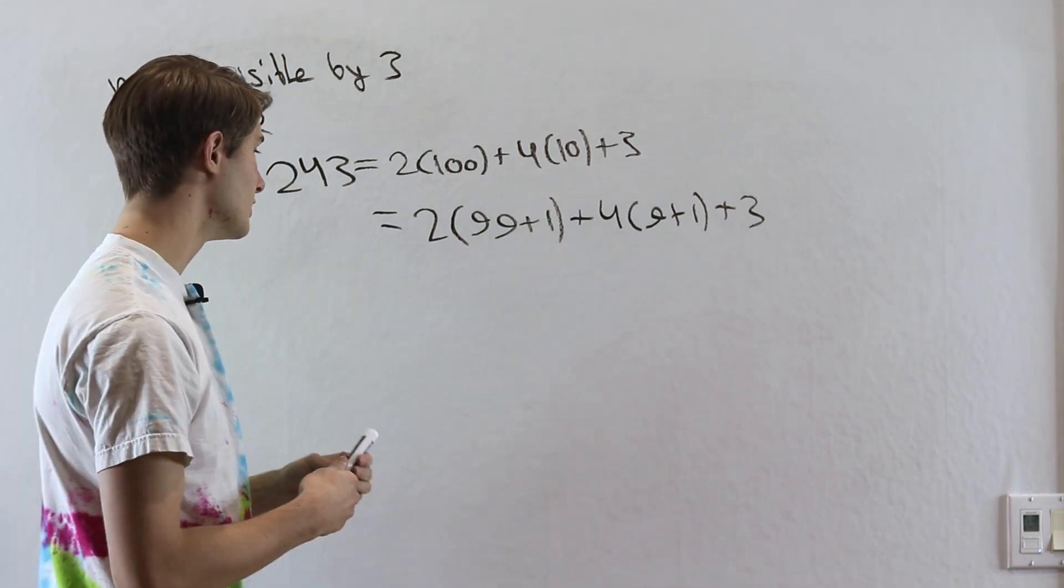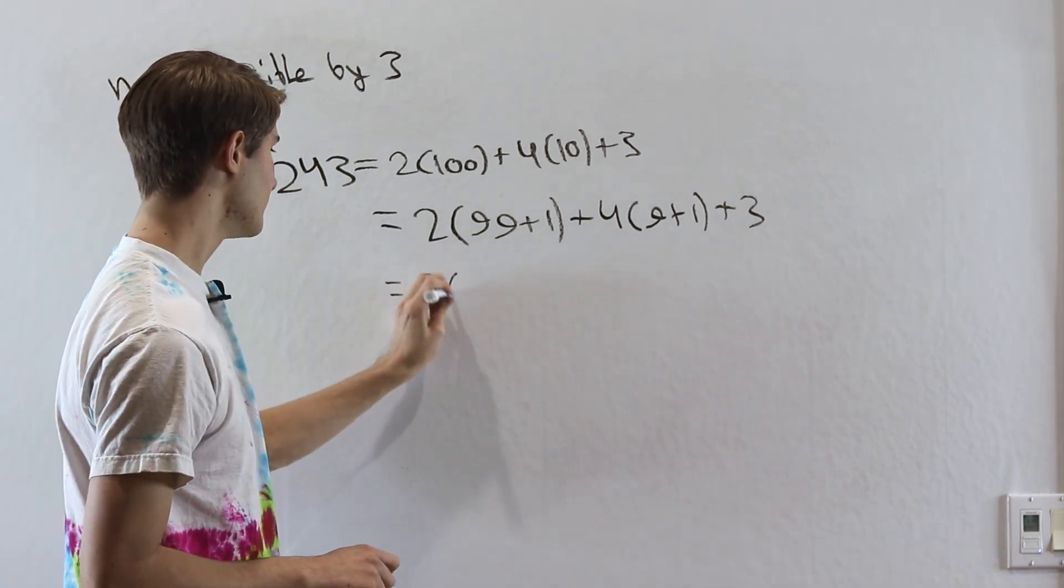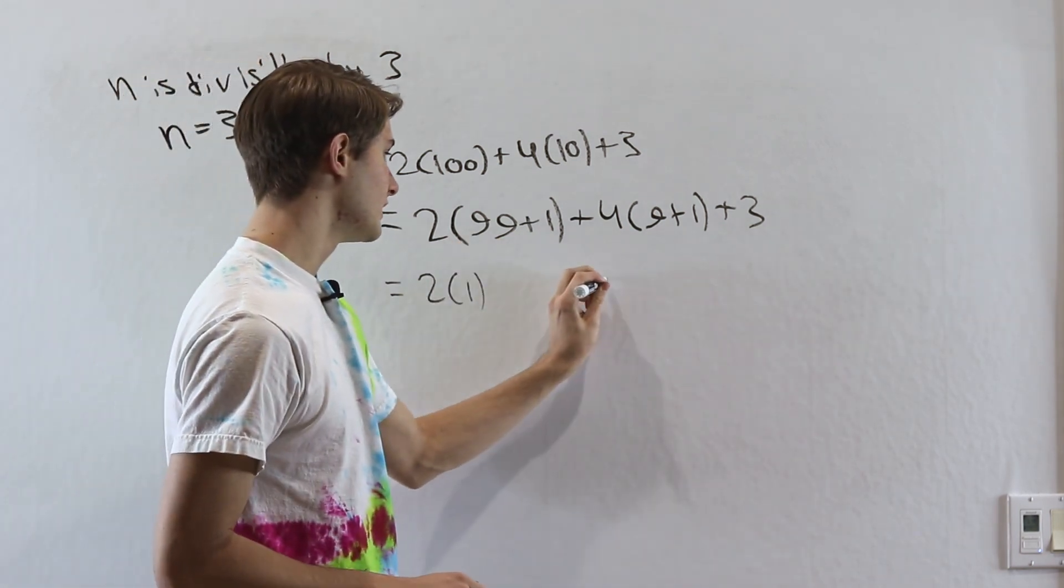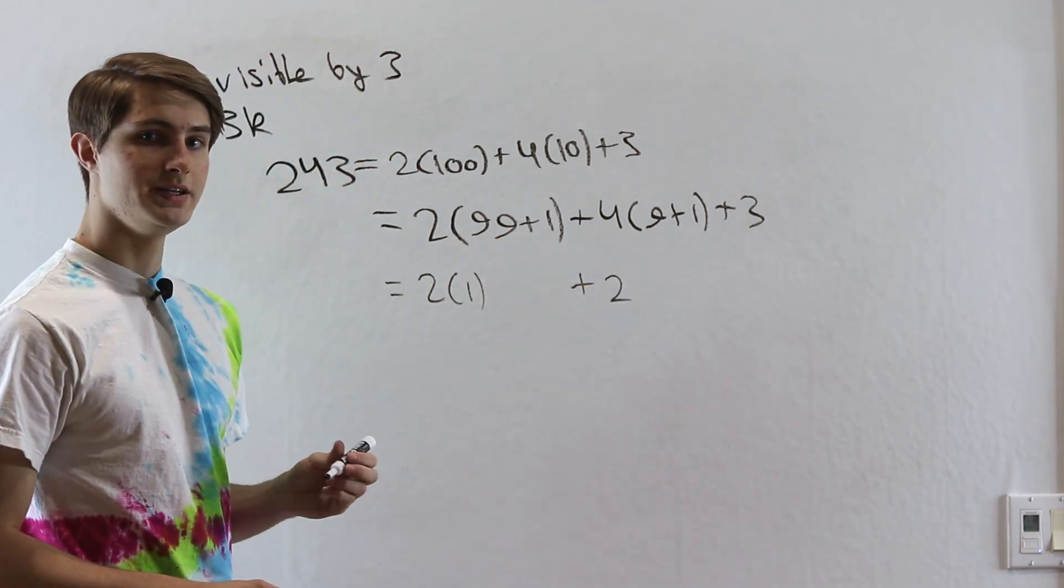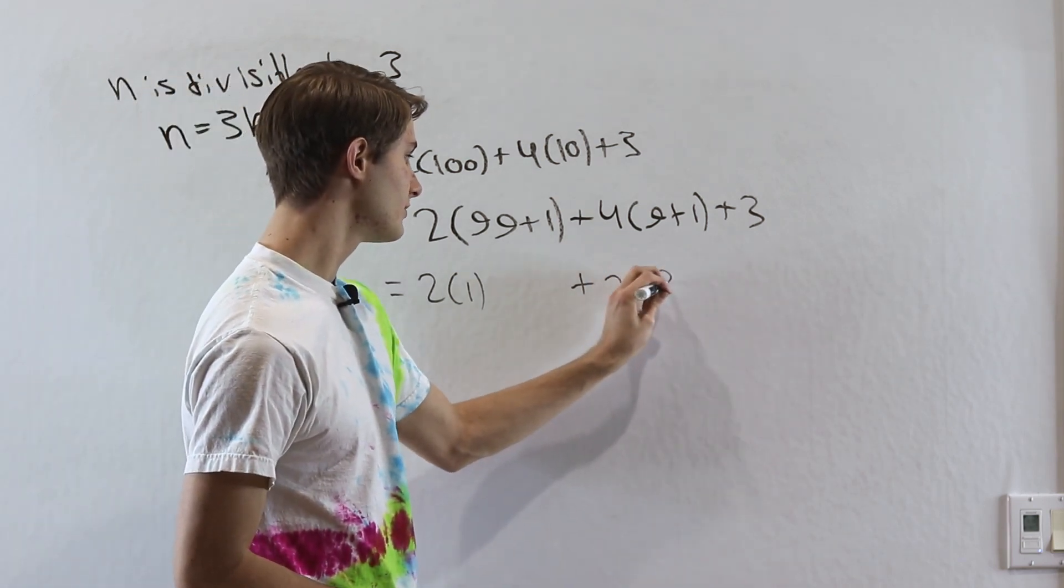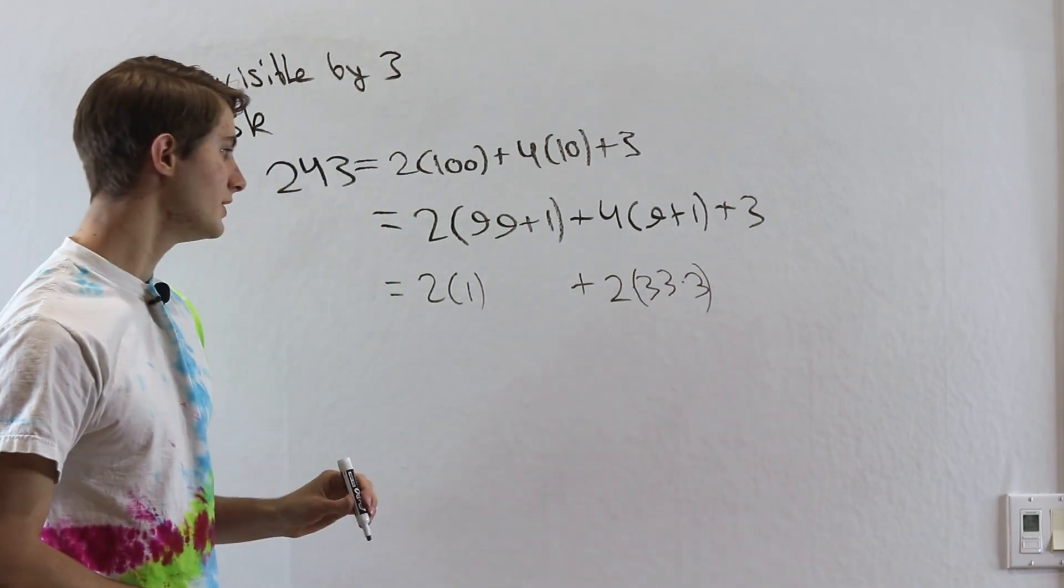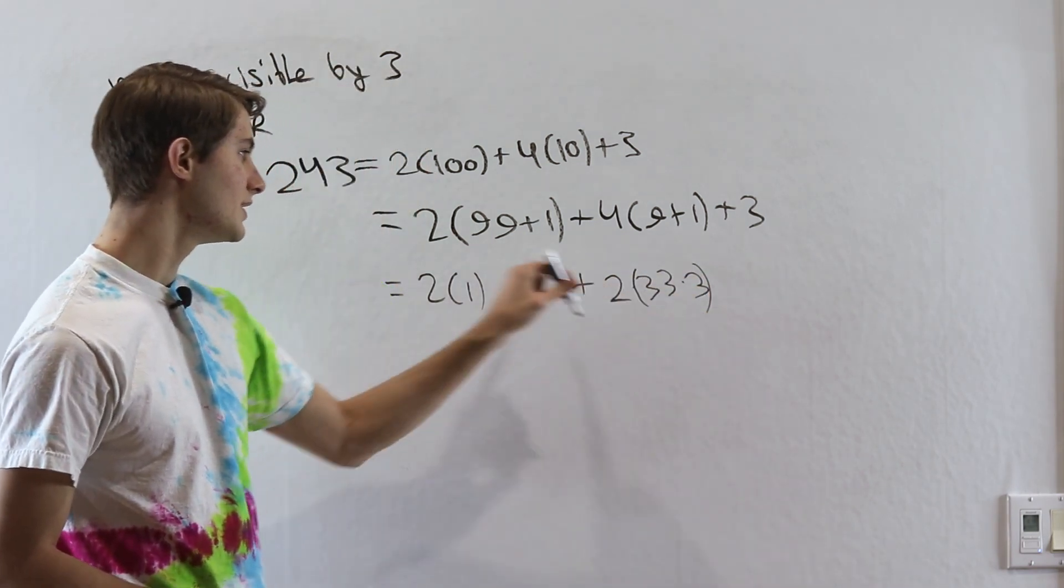First of all, we have 2 times 1. So we can write that at the start. And then we'll add 2 times 99. Well we can write 2 times 99 as 2 times 33 times 3, because we know that 33 times 3 gives us 99.